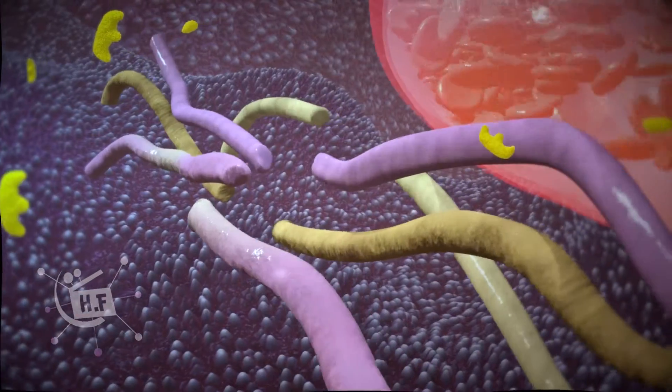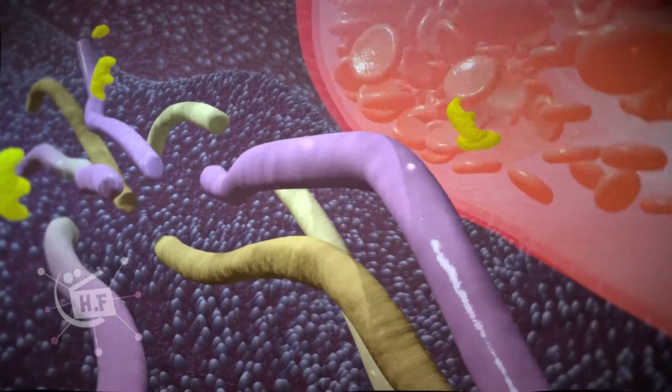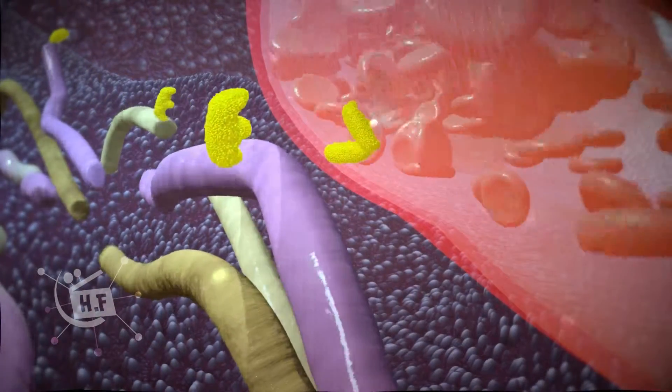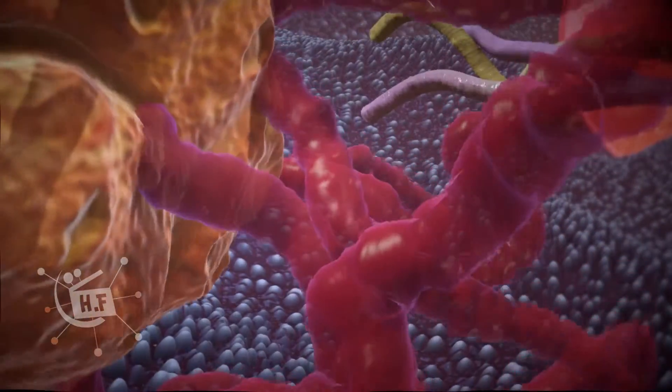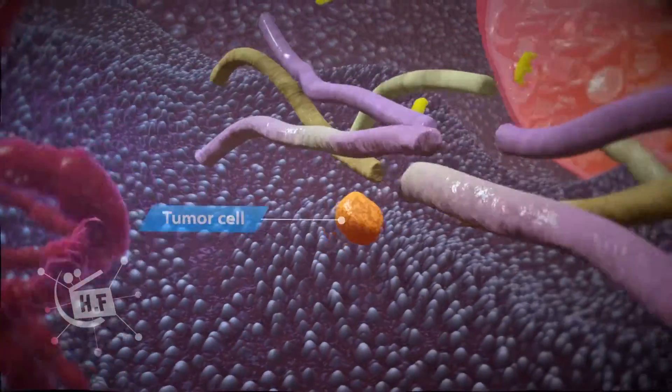By breaking down the surrounding tissue, these proteinases enable tumor cells to invade blood or lymph vessels, resulting in their migration to distant parts of the body and formation of metastatic disease sites.